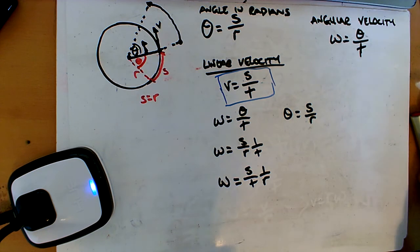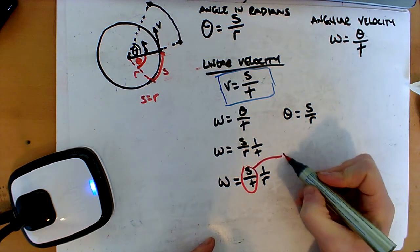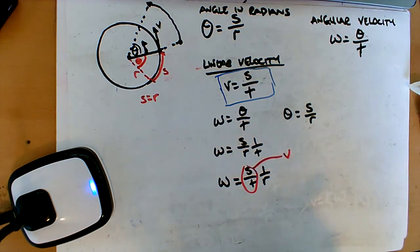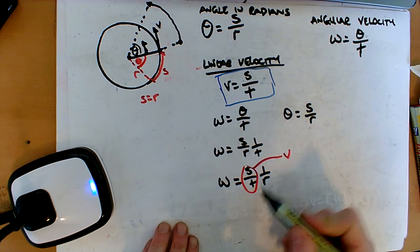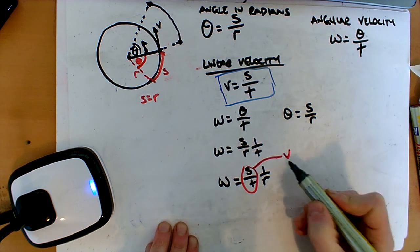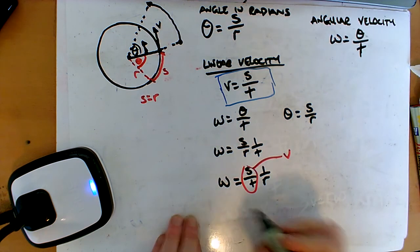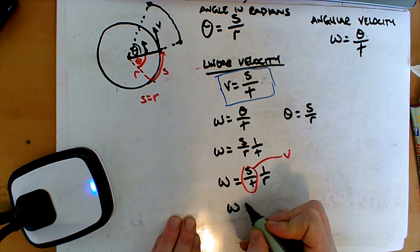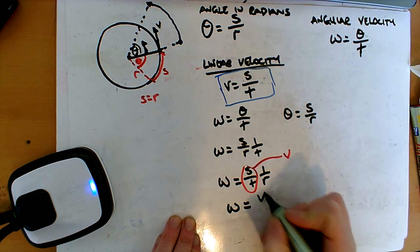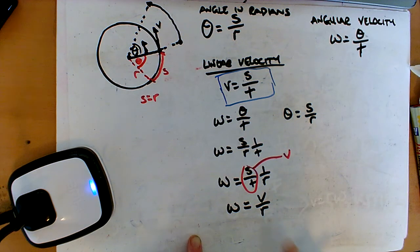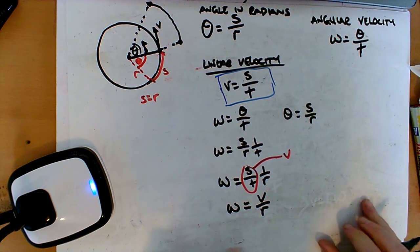And then we know that this S over t, well, this is our velocity. Because that's just displacement over time, isn't it? Or arc length over time. So that's how far it goes by the time taken. So that's just its velocity. So we can look. And now omega is equal to v over r. And that's exactly sort of what we want.